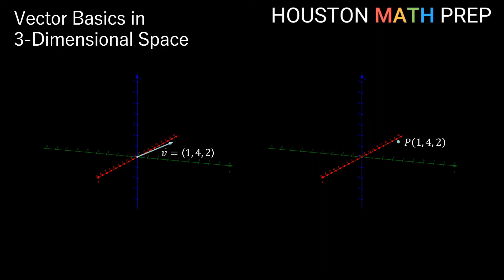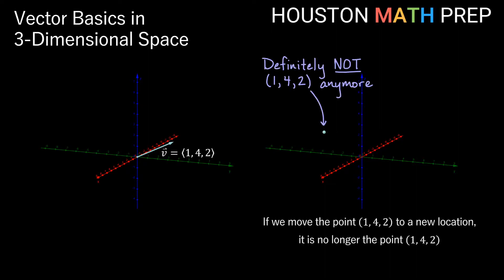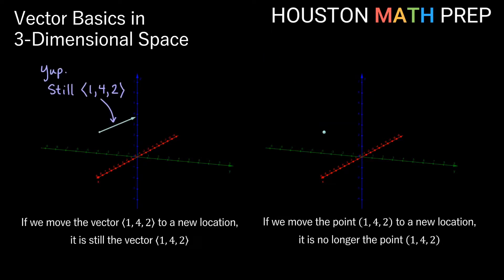Another big difference between a point and a vector is that if I move the point 1, 4, 2 to another location, I slide it to some other point in R3, I do a translation of that point, then it's no longer the point 1, 4, 2. It has some other coordinates that make it a different point. If I take the vector 1, 4, 2 and move its initial point off of the origin to some other location, I translate it somewhere else in 3D space, it's actually still the vector 1, 4, 2.